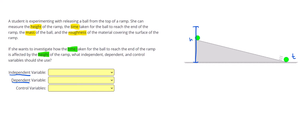So she's going to try this experiment on different ramps with different heights, and each time she's going to record the time. That means the independent variable, the one that she is setting first, is the height, and the one that she's recording later is the time.